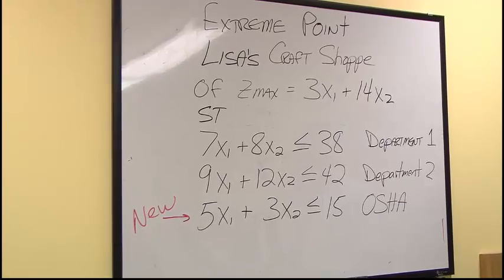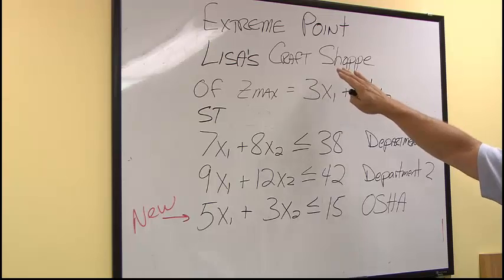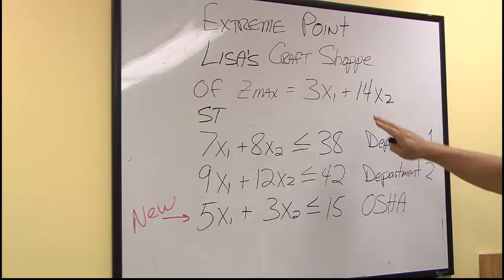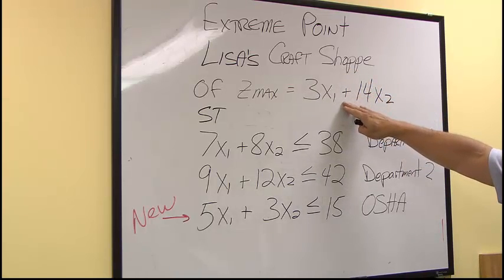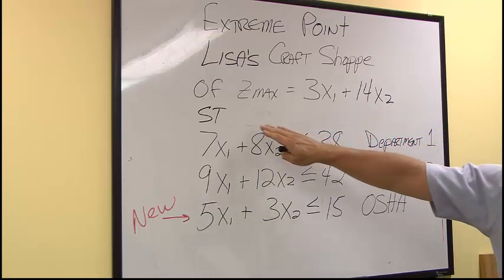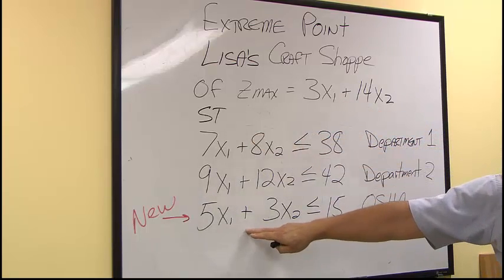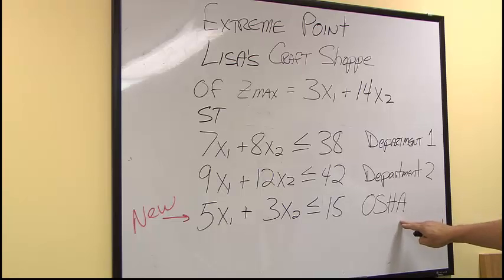The Extreme Point method is a continuation of the Lisa's Craft example. Same objective function with three constraints. Note that we've added a third constraint, a new constraint for OSHA.